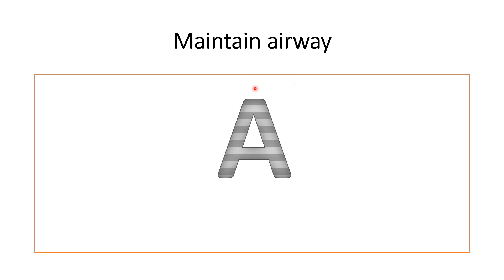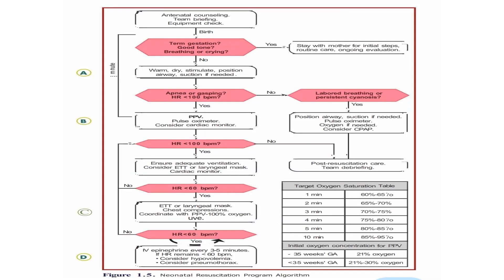We generally use the term 'A' for the initial steps of resuscitation — A for Airway. In the algorithm, if the answer to any one of the three rapid evaluation questions is no, we follow the sequence of initial steps of resuscitation.